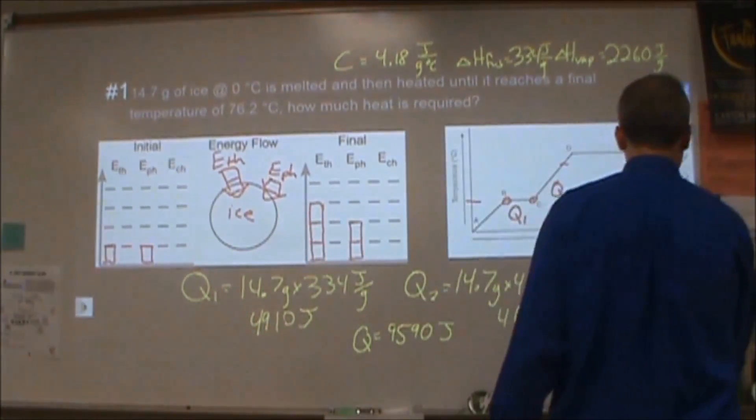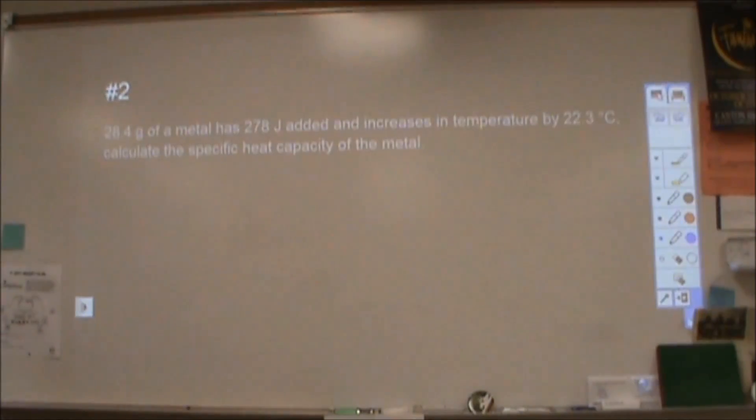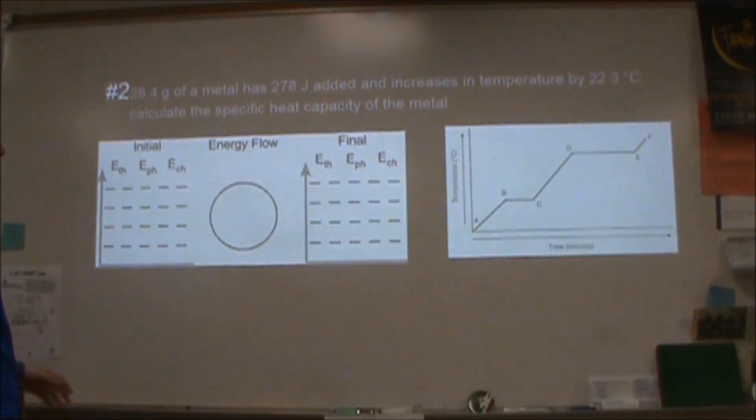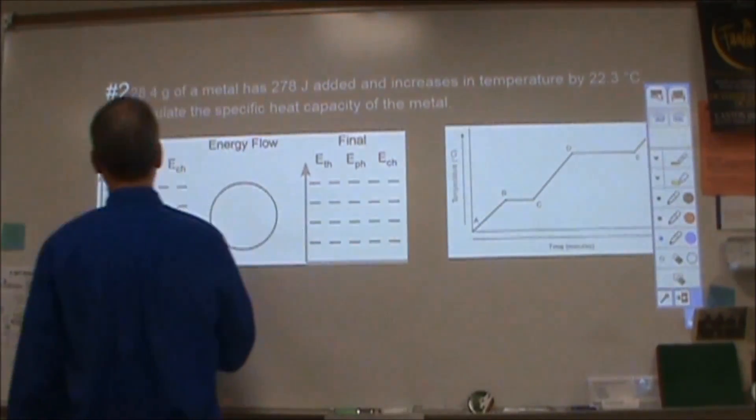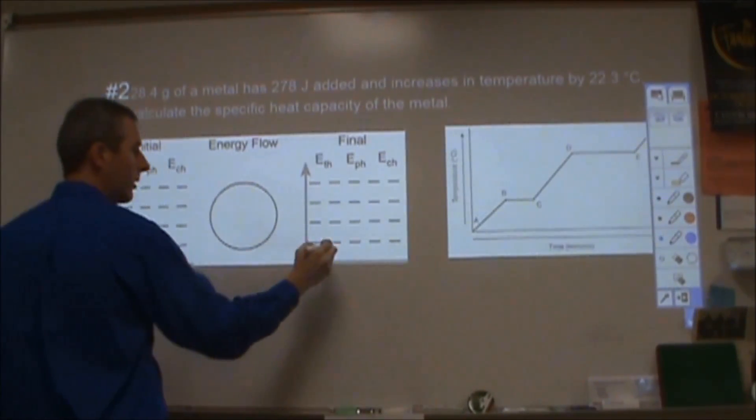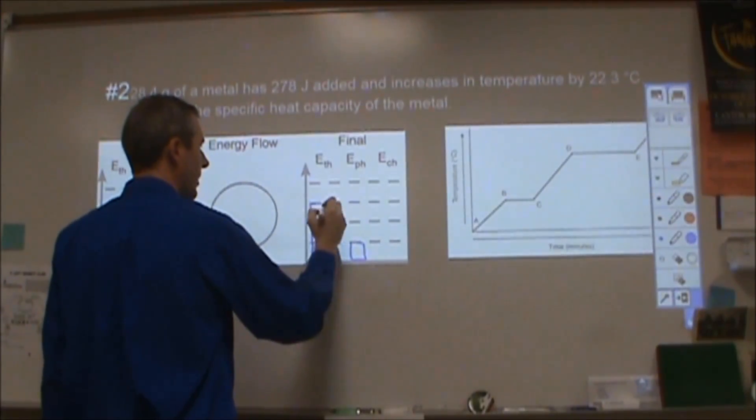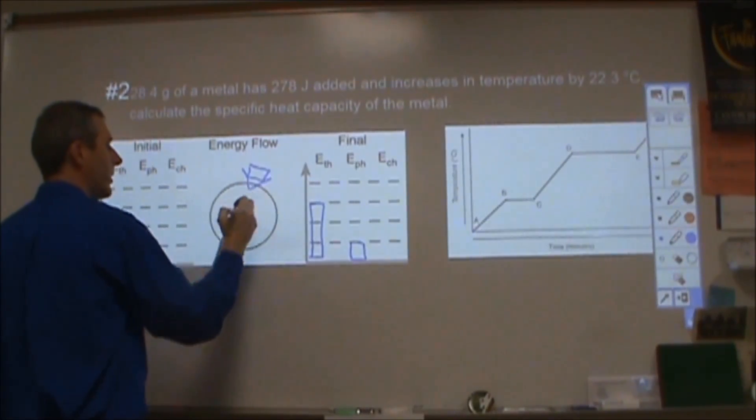Let's try a few more problems. Number two: I have a metal, I add some energy, it goes up in temperature. Find a specific heat capacity. For this, I'm going to fill out my LOL diagram. So I'm starting with a solid metal that is, it doesn't say what temperature it is, so let's assume it's at room temperature. So two bars, one bar of phase. I end up with one bar of phase, and let's say that it goes up enough that I can give it three bars of phase. So I have one bar of energy going into my system, which is the metal.